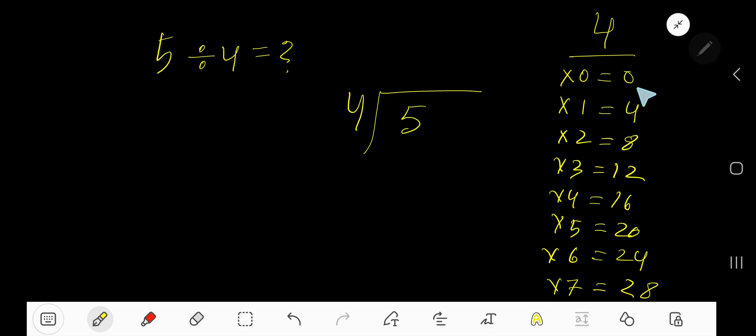To find out the multiplication table of 4, just add 4 to the previous step. 0 plus 4 is 4, 4 plus 4 is 8, 8 plus 4 is 12, 12 plus 4 is 16, 16 plus 4 is 20, 20 plus 4 is 24.